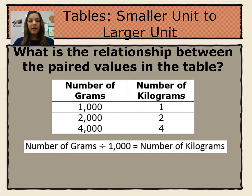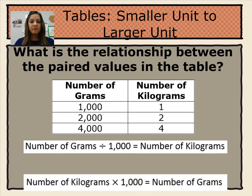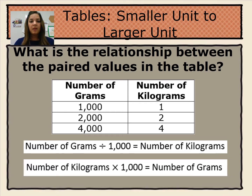So 1,000 divided by 1,000 equals 1. We can also do the inverse relationship — we can look from kilograms to grams. The number of kilograms times 1,000 equals the number of grams. So 1 kilogram times 1,000 equals 1,000 grams.